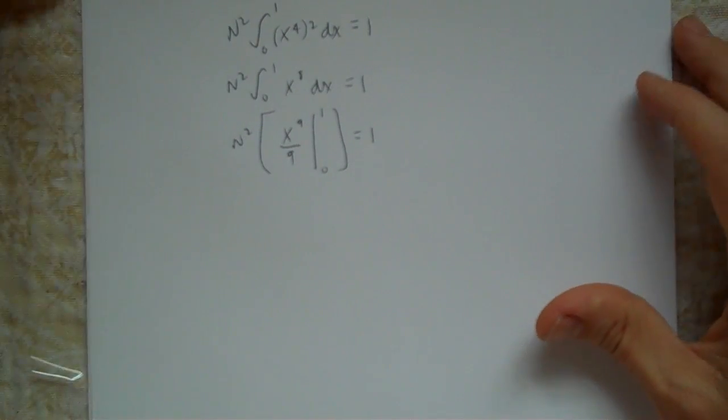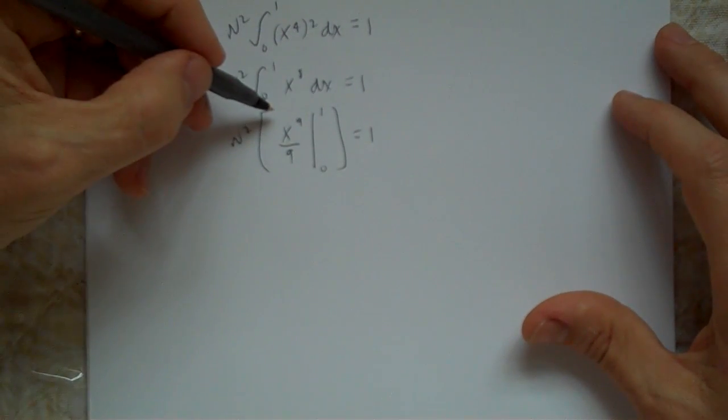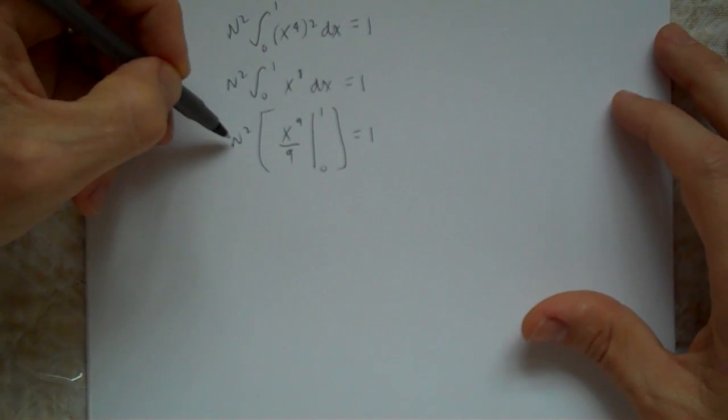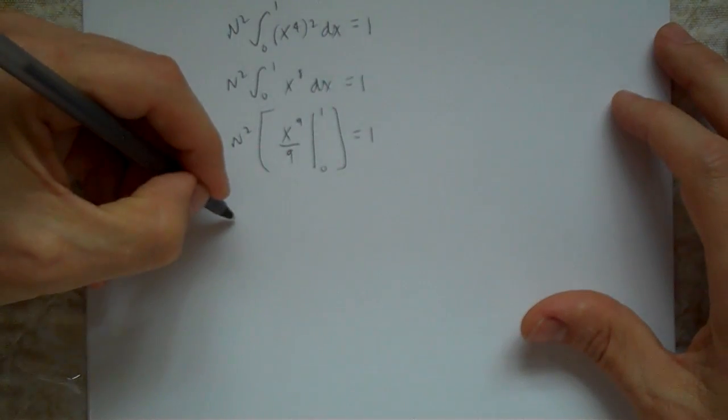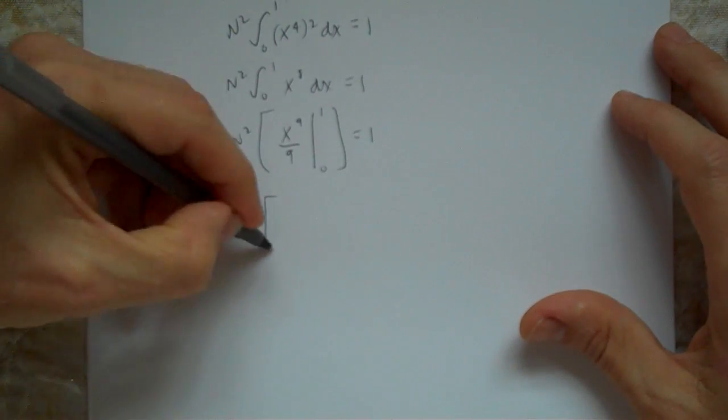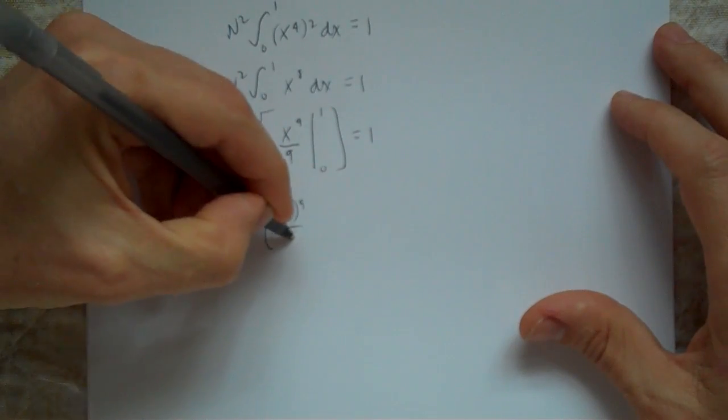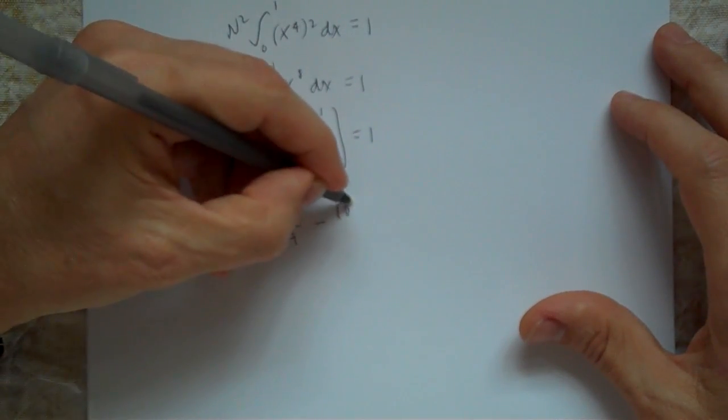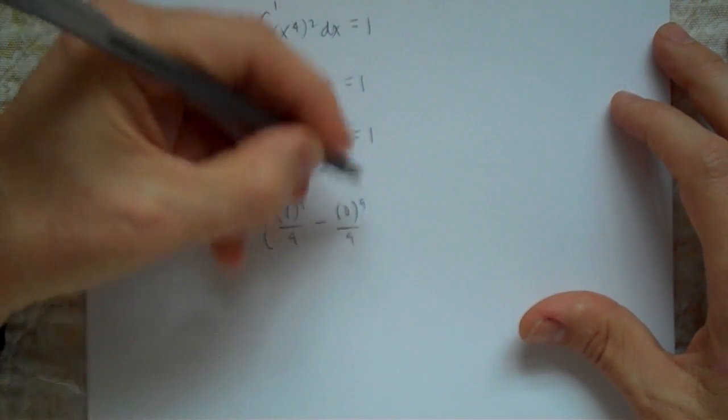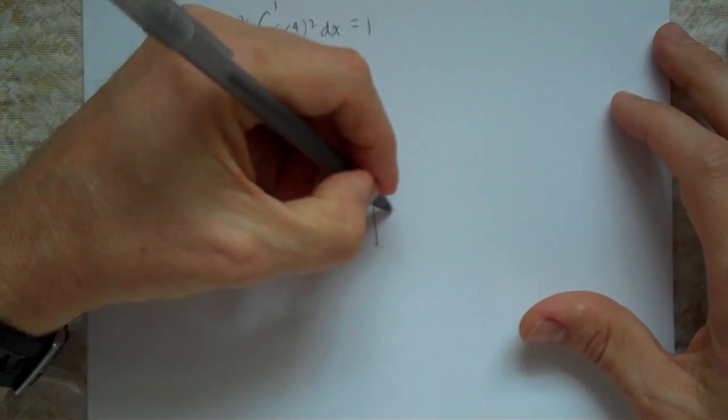I'm going to do this one more time. So it's n squared times (1 to the ninth over 9 minus 0 to the ninth over 9) equals 1.